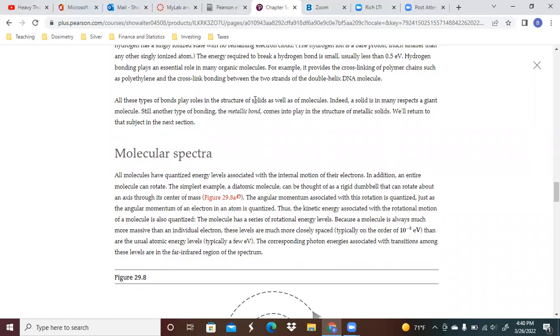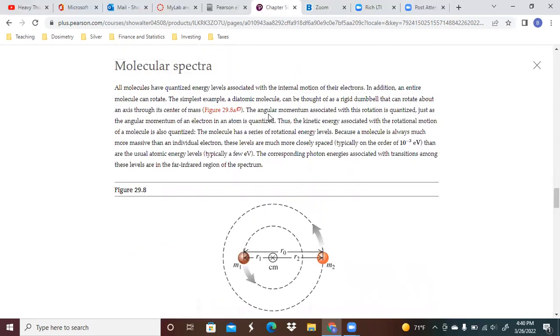All of these types of bonds play a role in the structure of solids as well as molecules. Indeed, a solid in many respects is a giant molecule. As a type of bonding, the metallic bond comes into play in the structures of metallic solids, and we'll get to that before too long.